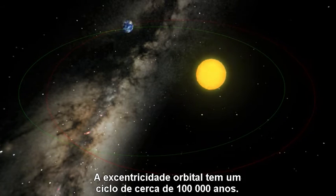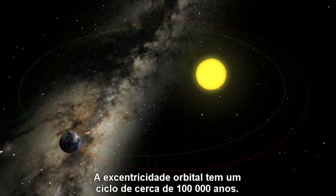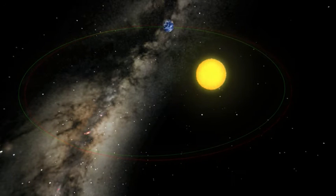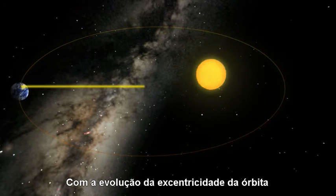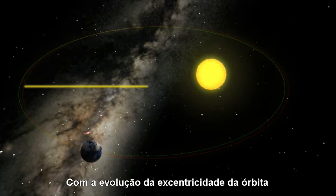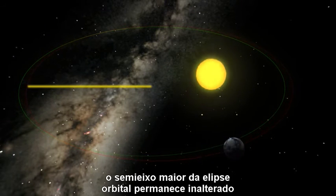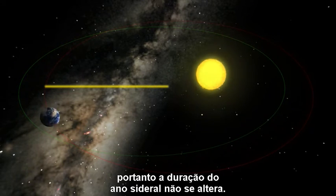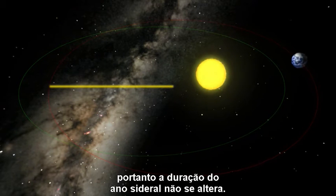The orbital eccentricity cycles with a period of roughly 100,000 years. As the eccentricity of the orbit evolves, the semi-major axis of the orbital ellipse remains unchanged, so the length of the sidereal year remains unchanged.